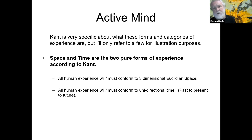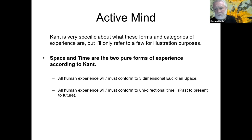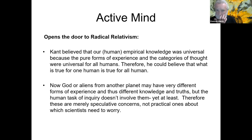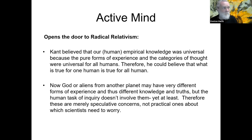Kant is very specific about forms and categories of experience. I'll focus on space and time — what Kant called the two pure forms of experience. All human experience will and must conform to three-dimensional Euclidean space, and all human experience must conform to unidirectional time, moving from past through present to future. This opens the door to a radical relativism: if our experience is a product of what the world provides and what we do with it, then if I do something different with what the world provides than you do, I'm making up a different truth.